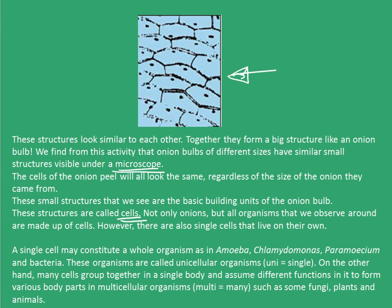Not only onions, but all organisms that we observe around us are made up of cells. However, there are also single cells that live on their own. A single cell may constitute a whole organism, as in the case of amoeba, chlamydomonas, paramecium, and bacteria. These organisms are called unicellular organisms, meaning single-cell organisms. On the other hand, many cells group together in a single body and assume different functions to form various body parts in multicellular organisms — such as fungi, plants, and animals.